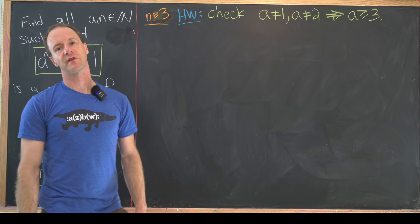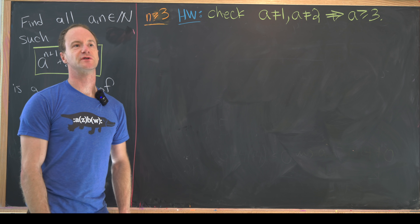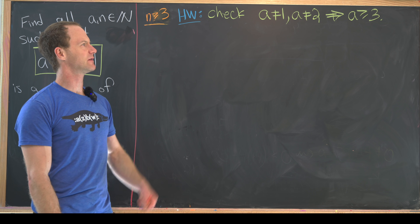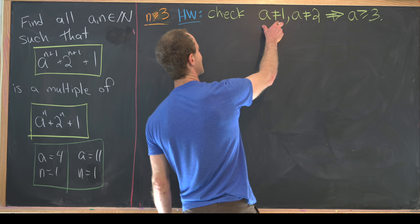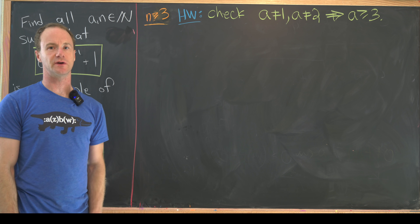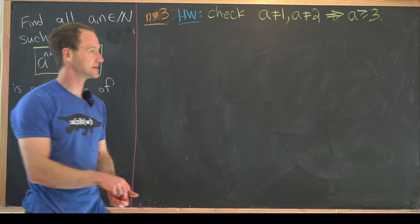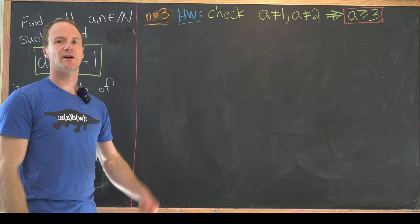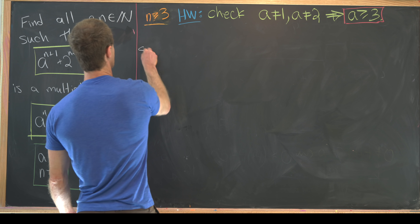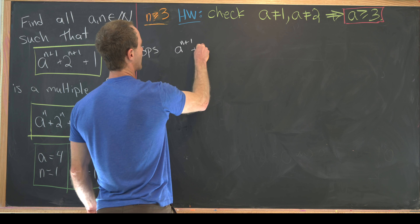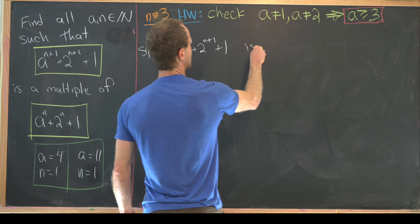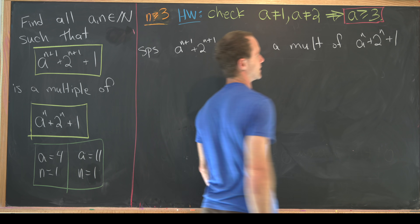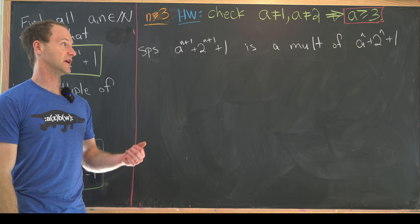We've found two solutions for n = 1 and shown there are none for n = 2. Now we tackle n ≥ 3. As homework, you can check that a = 1 and a = 2 yield no solutions, so we only need to consider a ≥ 3. Suppose we have a solution, meaning a^(n+1) + 2^(n+1) + 1 is a multiple of a^n + 2^n + 1.